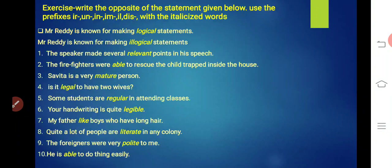My father likes boys who have long hair. My father likes boys who have long hair. What is the opposite of like? Dislike. My father dislikes boys who have long hair. Number eight. Quite a lot of people are literate in any colony. Literate means educated. What will we call uneducated? Illiterate. I-L. Quite a lot of people are illiterate in any colony. Number nine. The foreigners were very polite to me. What is the opposite of polite? Impolite. I-M in front. The foreigners were very impolite to me. Number ten. He is able to do things easily. What is the opposite of able? Unable. He is unable to do things easily.